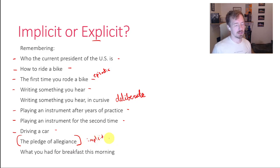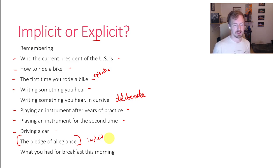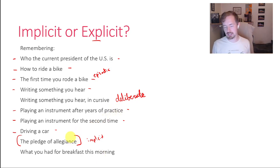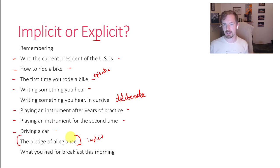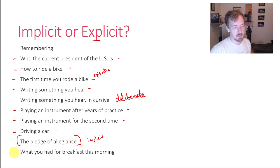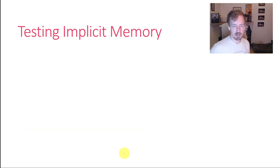The Pledge of Allegiance is also an implicit memory for most of you — you know it by heart and don't even have to think about it. But if I asked you what the second line is, you need to slow down and think hard. Whereas if you have it like a song, it's implicit and you can just recite it: 'I pledge allegiance to the flag of the United States of America, and to the republic for which it stands, one nation under God, indivisible, with liberty and justice for all.' What you had for breakfast this morning — that's an explicit memory.